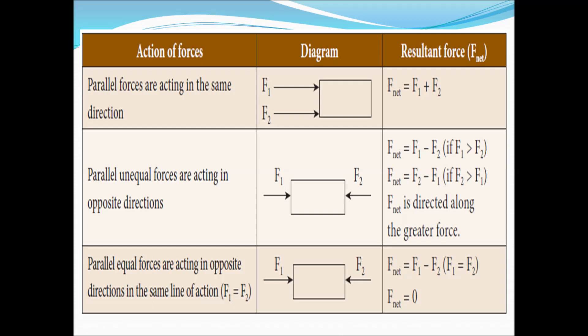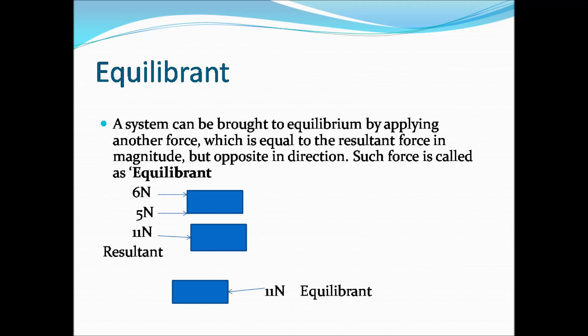The net force is directed along the greater of F1 and F2. If two equal and opposite parallel forces act on a block, the resultant force is zero — F_net = F1 − F2 = 0 since F1 = F2. This is how you find the resultant force for multiple forces acting on an object.